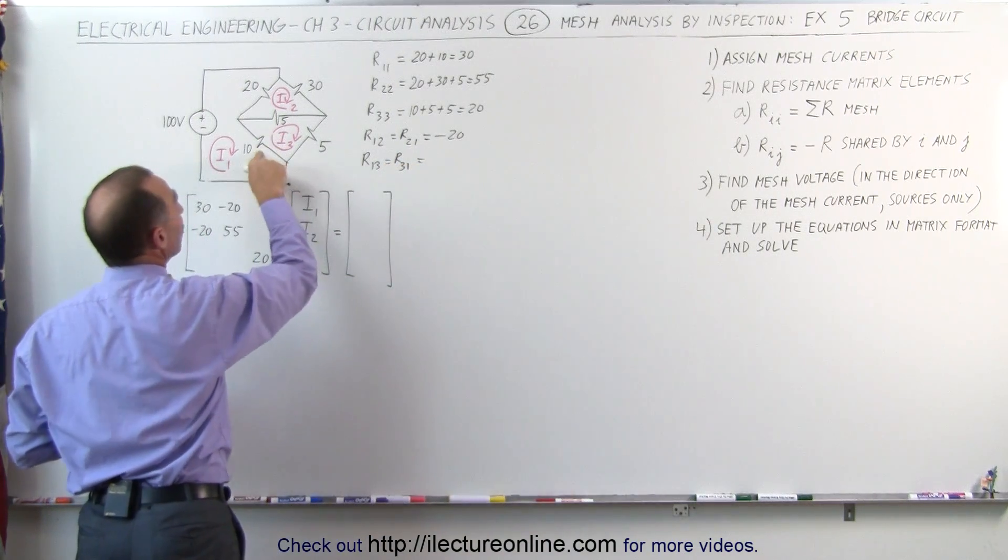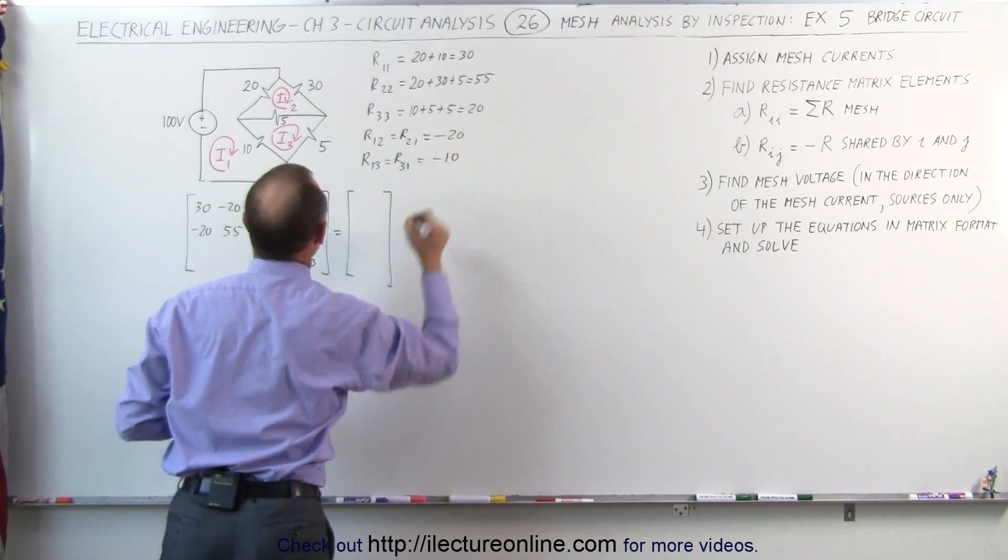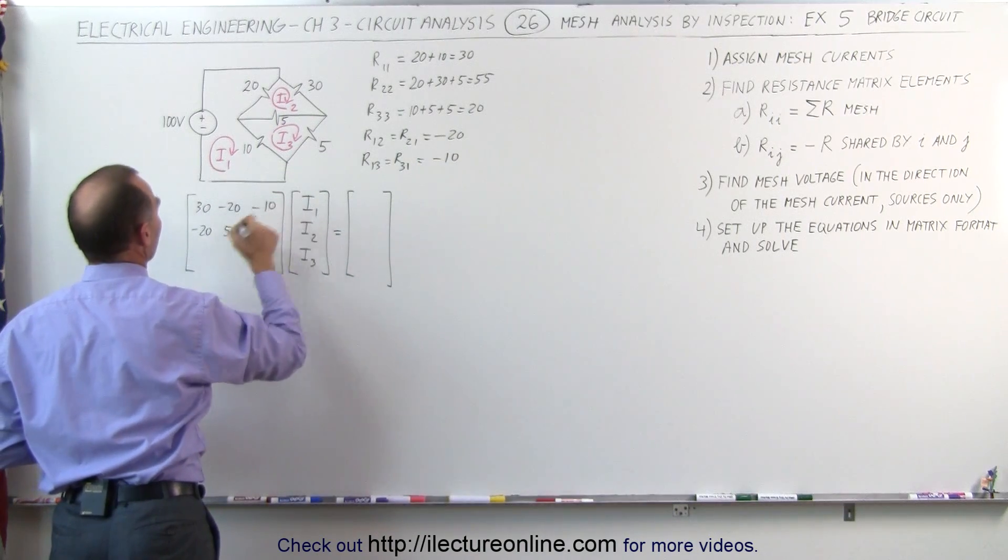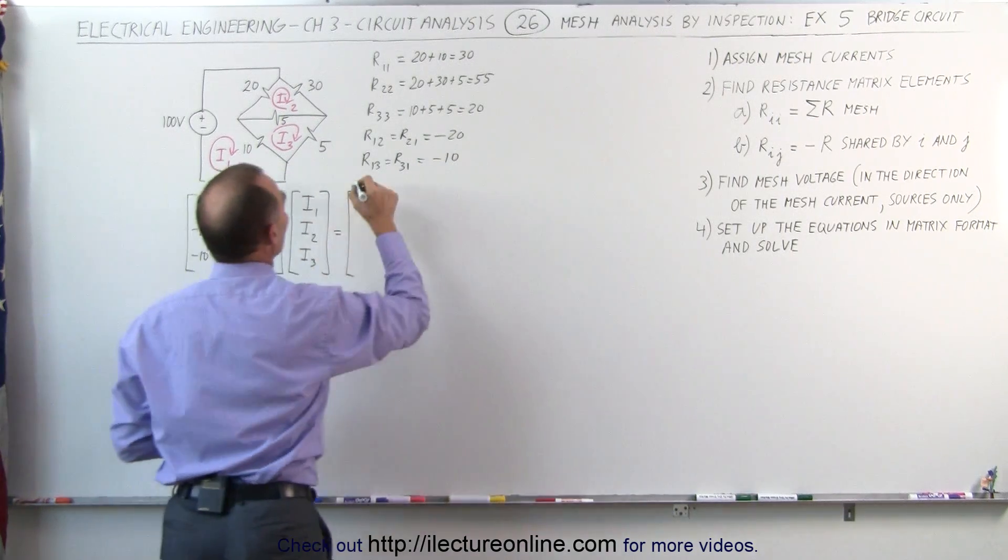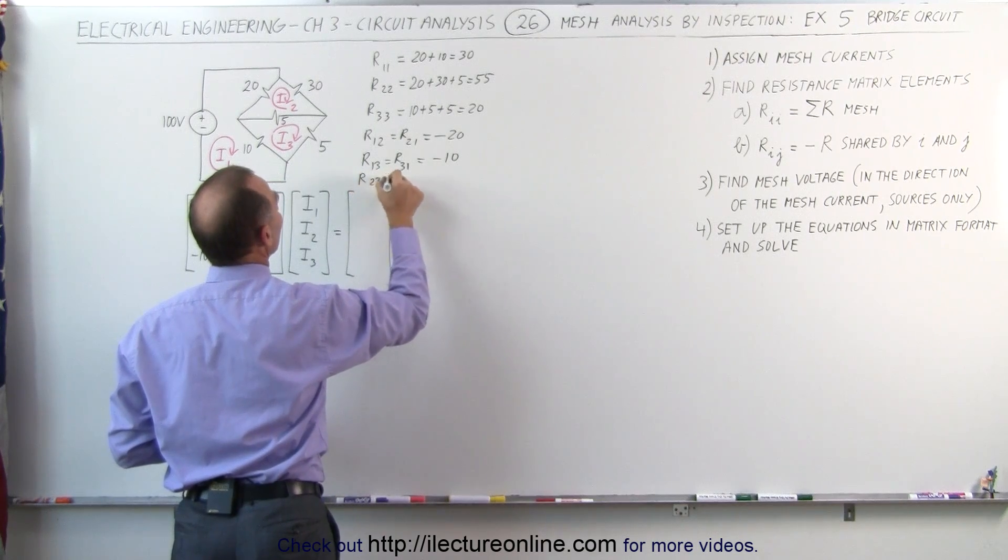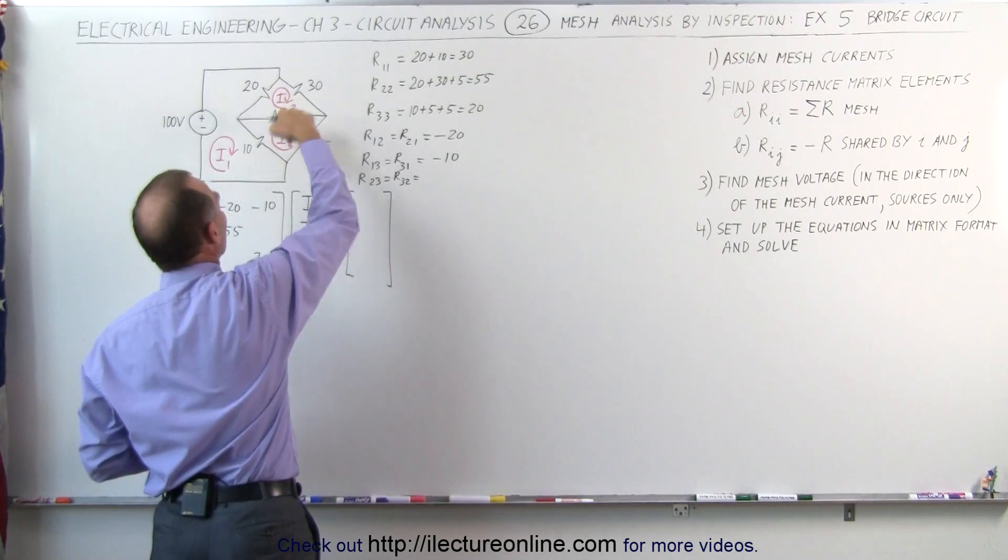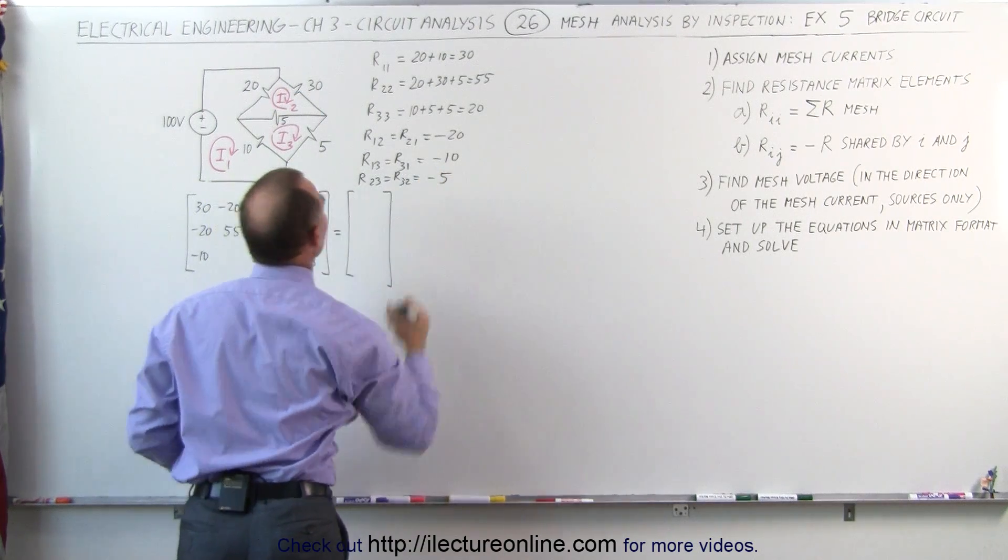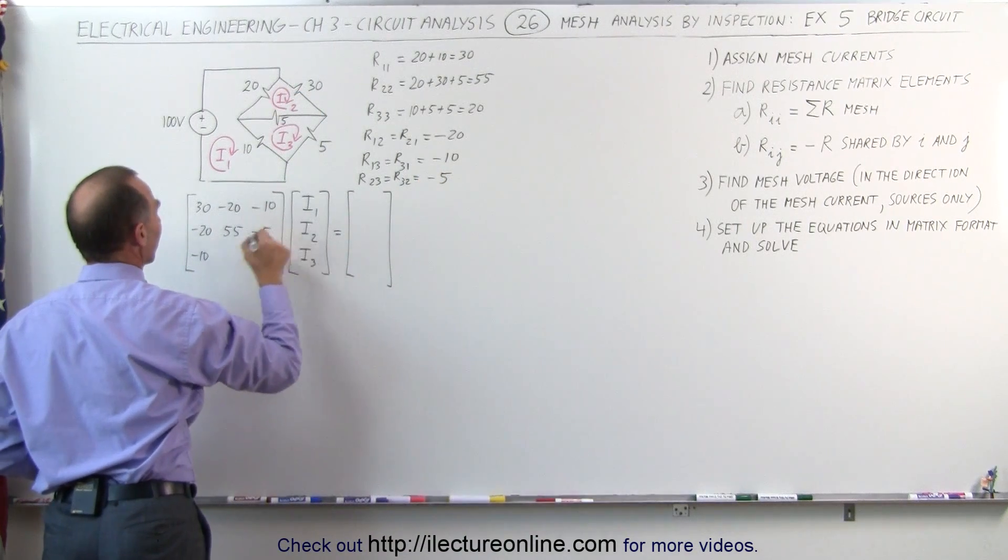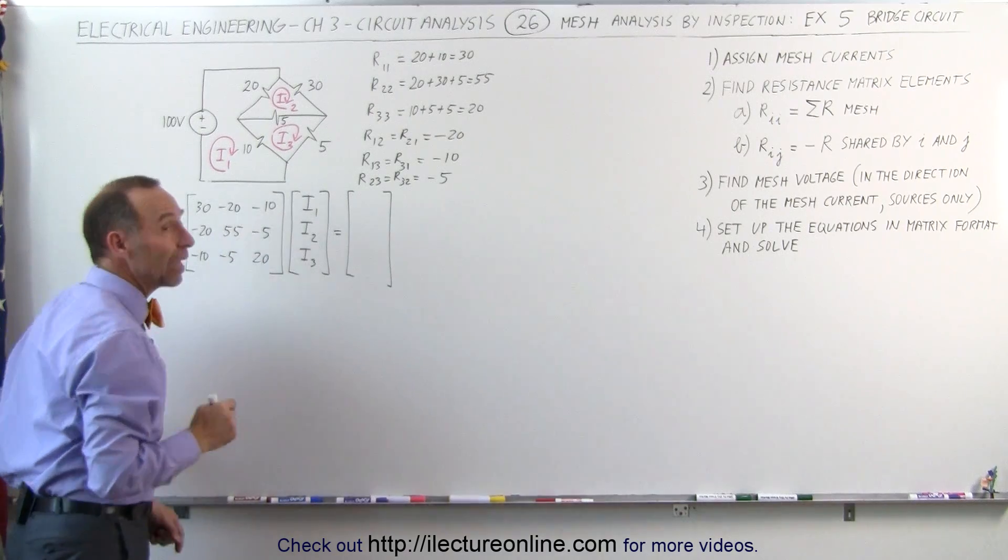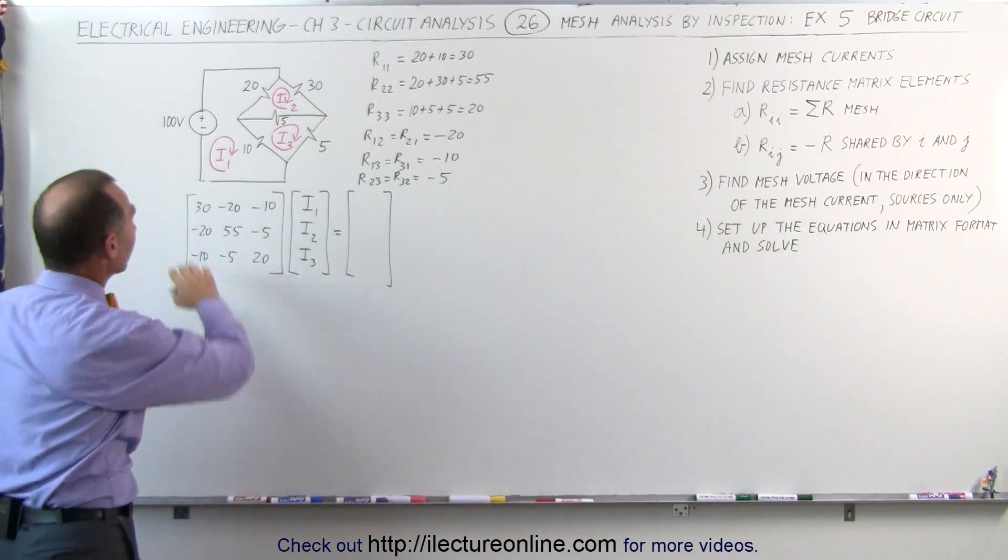Next, we want to find R13, which is the same as R31. What is common between 1 and 3? It's a 10 ohm resistor. We put down minus 10, minus 10, minus 10. And finally, we need to find the R23, which is the same as R32, which is equal to the resistor shared by those two loops. Put a negative in front of that. That's minus 5, minus 5, and minus 5. So now we have all nine elements in the resistor matrix.